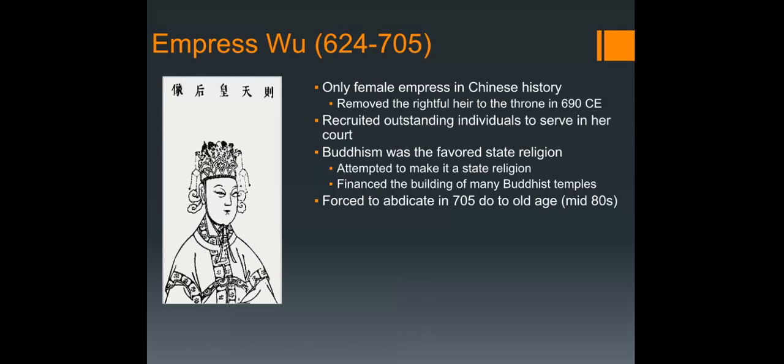Empress Wu is next — the only female empress in Chinese history. She removed the rightful heir to the throne in 690 CE and recruited outstanding individuals to serve in her court. Buddhism was the favored state religion under her, as it was under most Tang emperors, who used Buddhism to legitimize their rule and attempted to make it a state religion.